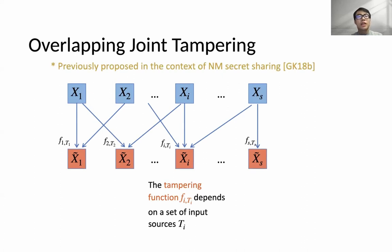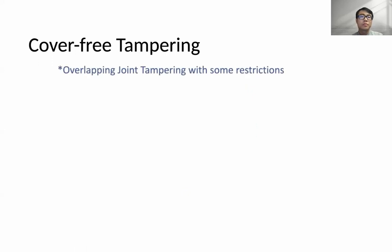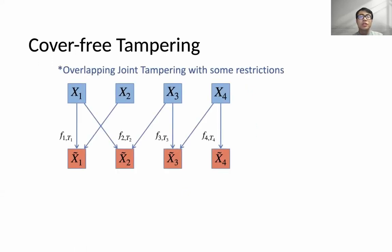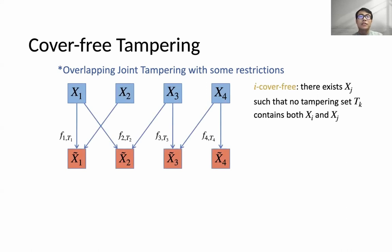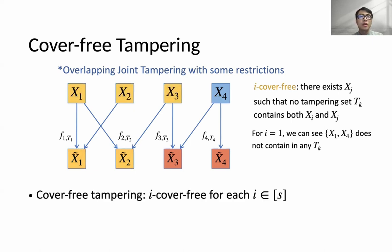However, it is hard to protect against general overlapping joint tampering. So instead, we consider a more restricted tampering model called cover-free tampering, which is overlapping tampering with some constraints. Given overlapping tampering, we say it is i-cover-free if there exists an X_j such that no tampering set T_k contains both X_i and X_j. We say it is cover-free tampering if it is i-cover-free for each i in S. This tampering model includes a rich class of tampering functions.